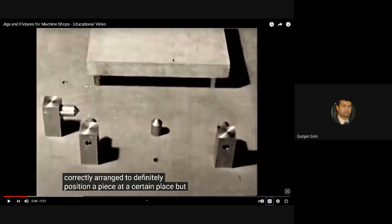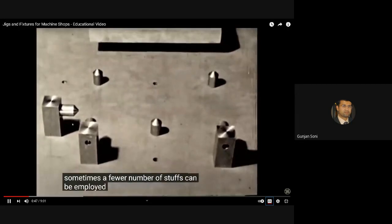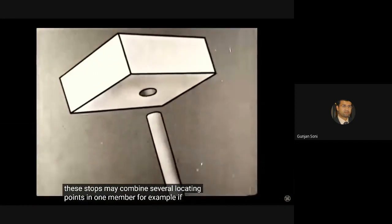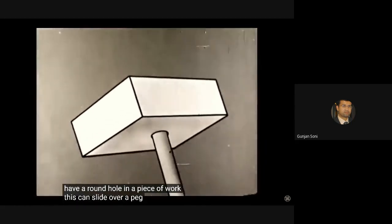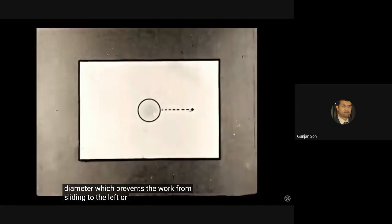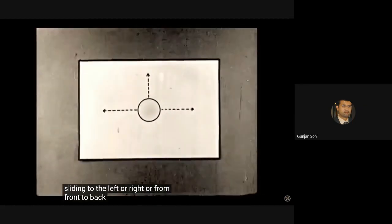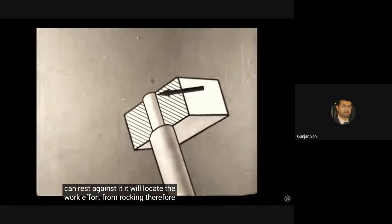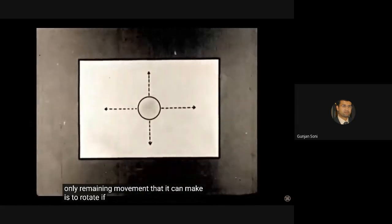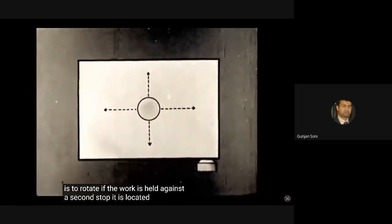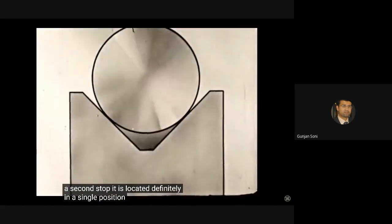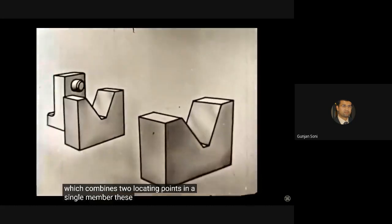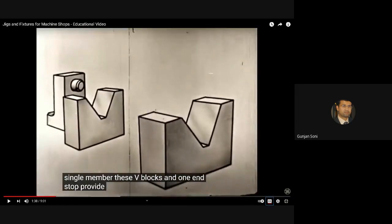We see that it is necessary to have at least six locating points correctly arranged to definitely position a piece at a certain place. So we need six points to locate a piece at a certain place, a rectangular piece. But sometimes a fewer number of stops can be employed successfully because some of these stops may combine several locating points in one member. For example, if we have a round hole in a piece of work, this can slide over a peg of the same diameter, which prevents the work from sliding to the left or right or from front to back.